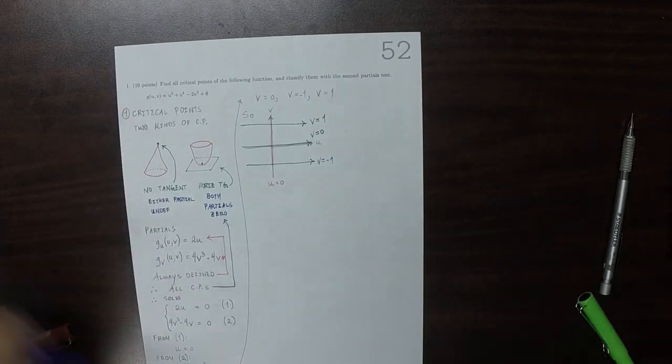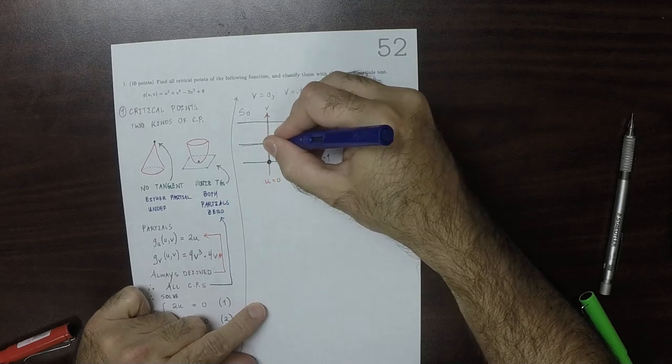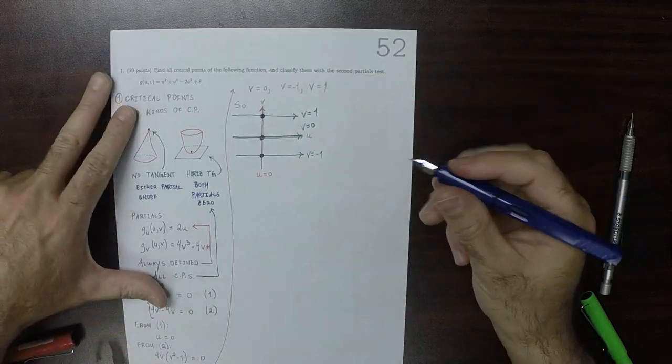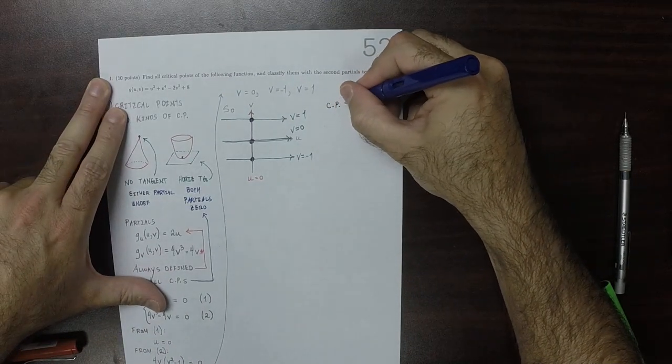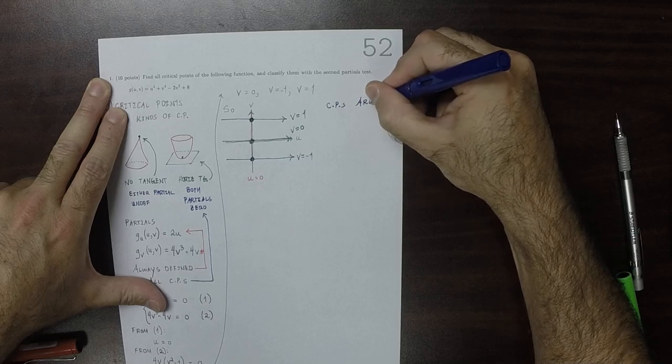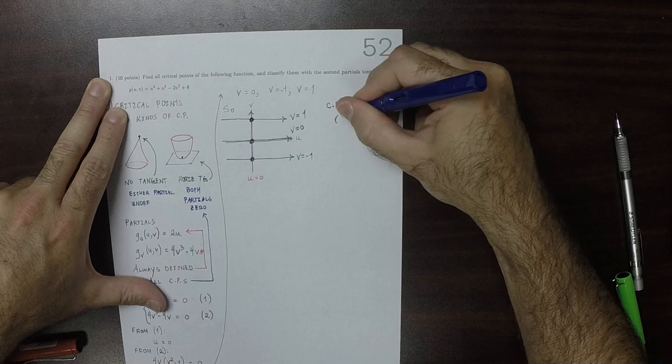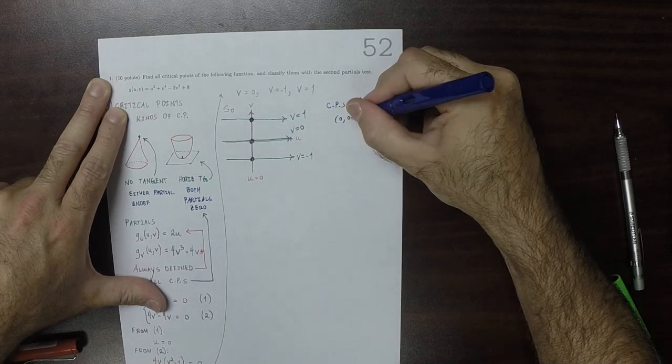So that means that there are three critical points. This one, this one, and this one. So the critical points are zero, zero. U is zero, and V is zero.